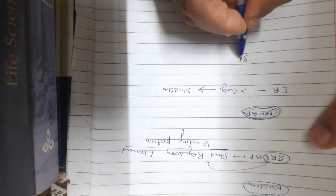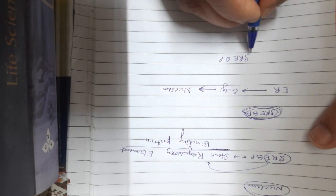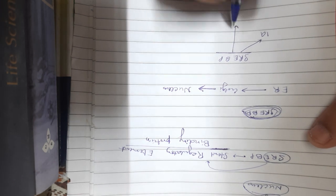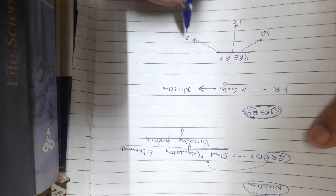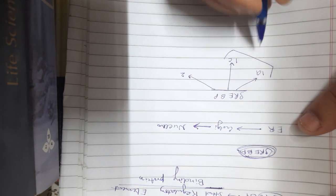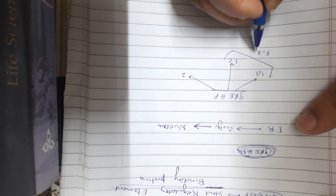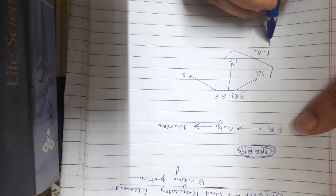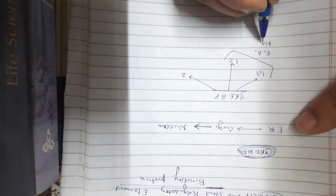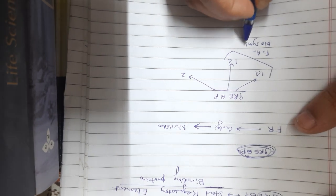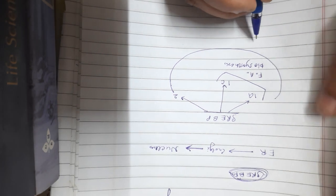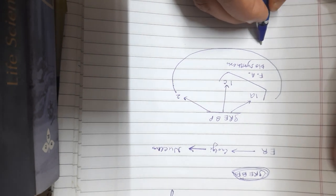There are three types of SREBP: SREBP 1A, SREBP 1C, and SREBP 2. SREBP 1A and 1C are transcription factors that regulate fatty acid biosynthesis. All three types of SREBP have essentially the same mechanism of action.